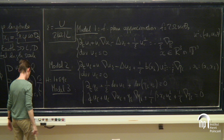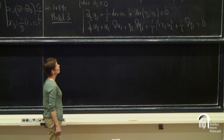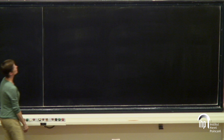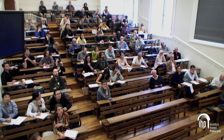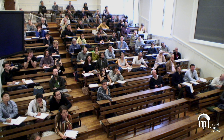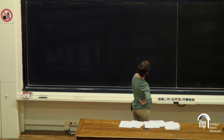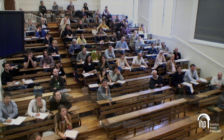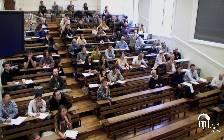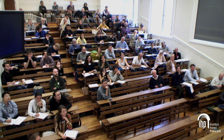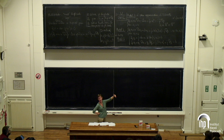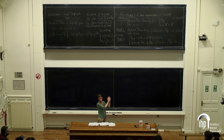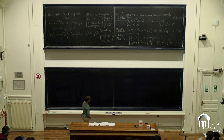An audience member asks about the third term in the second equation for model three — specifically eta times gradient eta. This comes from the nonlinear term in the shallow water equations; u-epsilon is a vector, eta is a scalar, and eta times gradient eta is one half of gradient of eta-squared. So you can see it just as a gradient term, like a force coming from a potential — the potential energy.